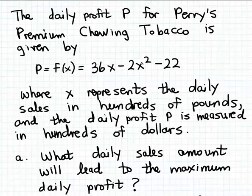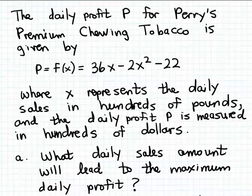In order to answer this question, we want to think about this function which gives us the daily profit. Notice that this is a quadratic function because it has the characteristic term where the input variable is squared. That's an important clue, because the graphs of quadratic functions are parabolas that either open up or down.